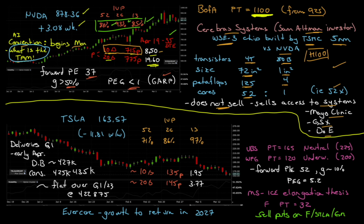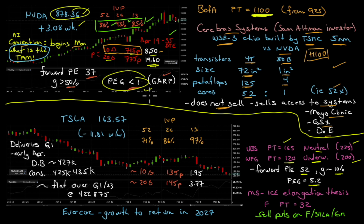Moving on to Tesla — absolutely different story. Things are getting negative: UBS new price target of $165, rating of neutral down from $225. Wells Fargo price target of $120 with an underweight, last target was $200. Forward P/E of 52, growth rate around 10% forecast for the year — PEG of 5.2, a super expensive stock. At the elevated price of Nvidia looking at its PEG ratio it's a super cheap stock; at $163.57 — down over $100 from its high a couple of months back — Tesla is still a super expensive stock.